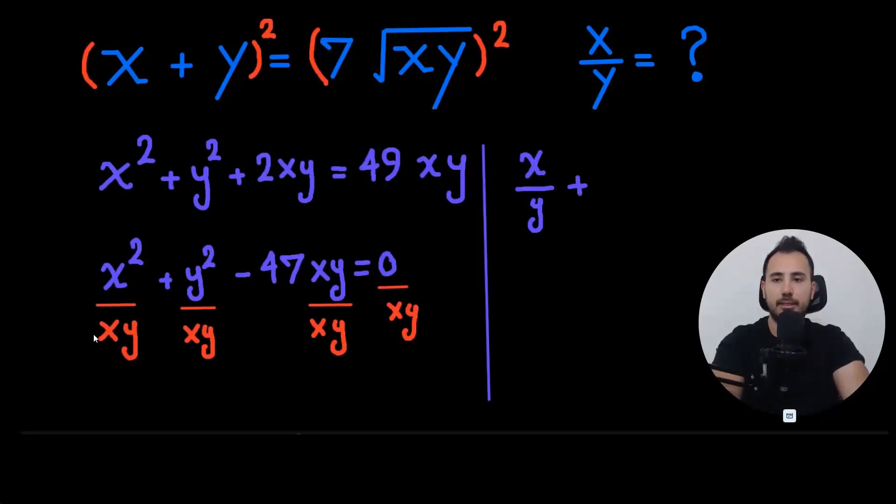The first term will be x over y, because one x and x is cancelled. The second term, y's are cancelled. And the third term will be negative 47, because xy is cancelled by xy. And 0 divided by any number that is not 0 again will be 0.